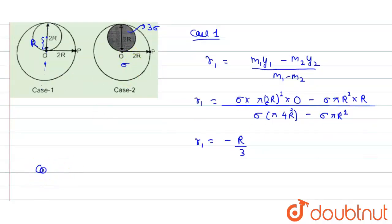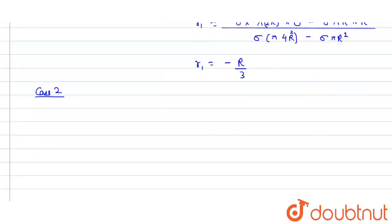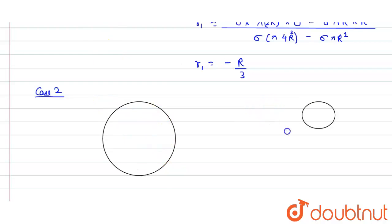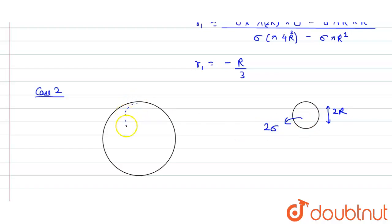In Case 2, we are adding mass. The disc placed in the hole has mass density 3σ. We can decompose this: consider the full disc of uniform density σ, and then add an extra disc of density 2σ in the upper portion of diameter 2r. This is because the full disc already contributes 1σ, and we only need to add 2σ more.